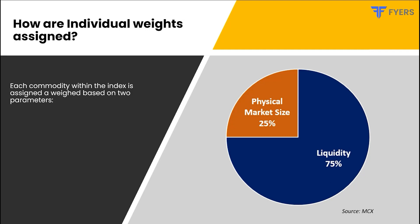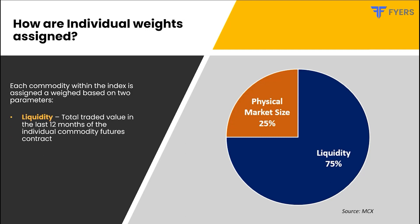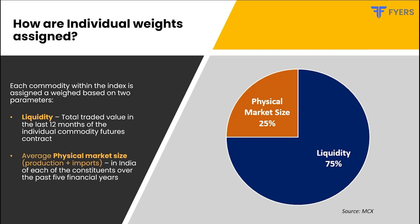As you can see in the pie chart, 75% of the weight is calculated based on liquidity of individual commodities traded on the MCX over the past 12 months. The remaining 25% of the weight is calculated based on physical market size in India, which consists of production and import statistics over the past five financial years. Liquidity, therefore, has a significant say in determining the weight of each commodity within the index.